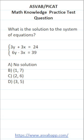This math knowledge practice test question for the ASVAB and PICAT says, what is the solution to the system of equations: 3y plus 3x equals 24, 6y minus 3x equals 39?